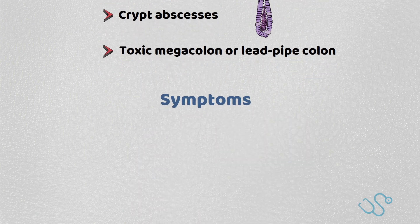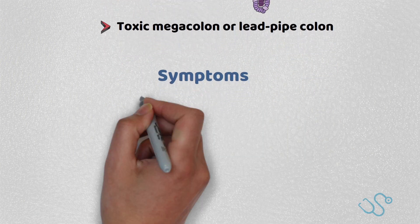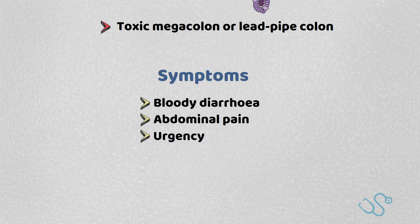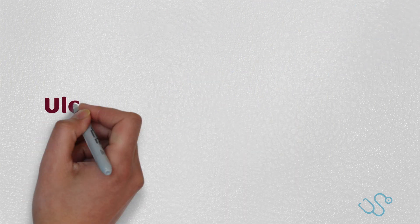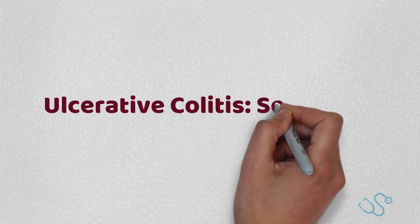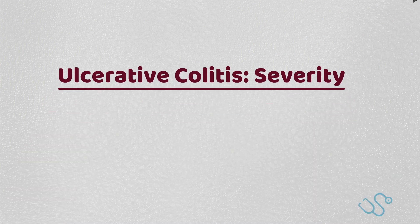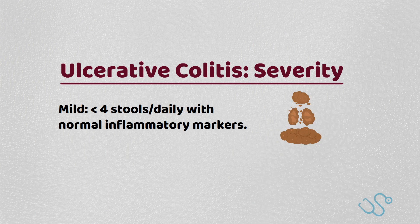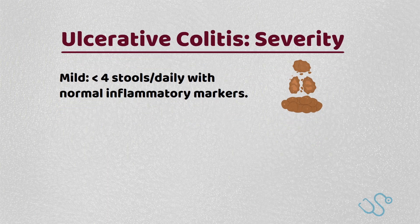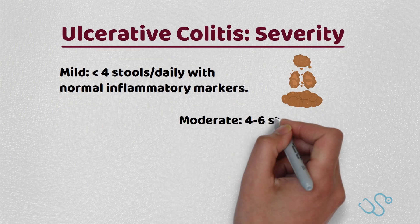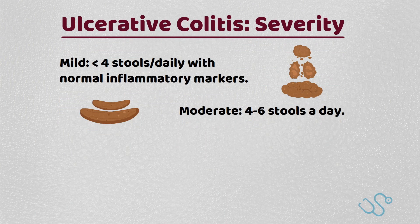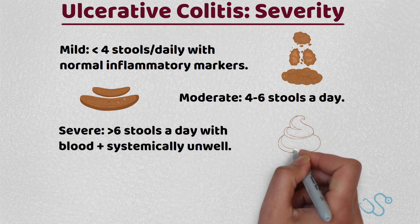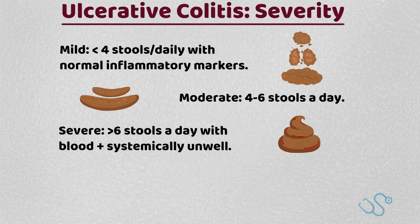Most patients present with bloody diarrhoea, abdominal pain and urgency. Once diagnosed, the severity can be established as follows: mild flare-ups include less than 4 stools daily with normal inflammatory markers, moderate flare-ups are between 4-6 stools daily, and severe flare-ups are more than 6 stools a day and being systemically unwell.